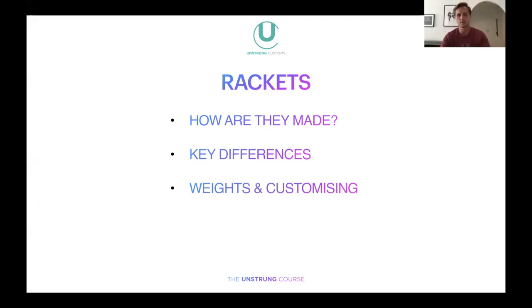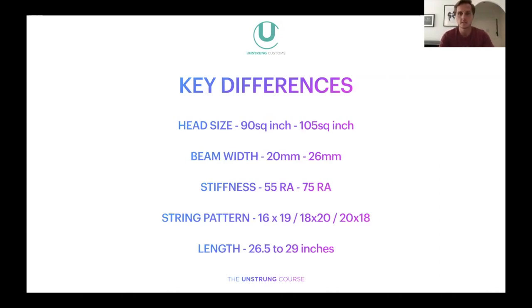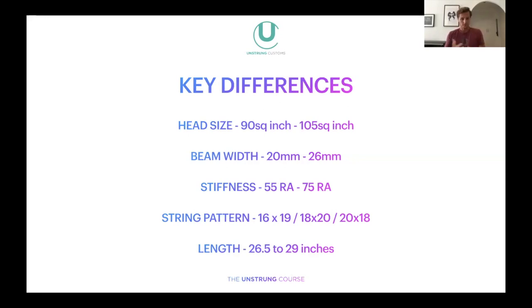Now I'm going to talk about some key differences in rackets. In terms of head size, you generally find rackets between 90 to about 105 square inches, but these days the most popular are between 97 and 100 square inches — a difference of only about 3 square inches. That might not seem like a lot, but when it comes to playability and the feeling of the racket, you would notice it. One of the most famous small head rackets was the 90 square inch one Federer used to use.